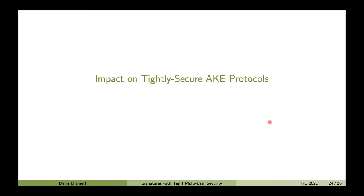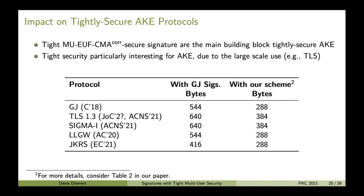As I said in the introduction, our construction is a perfect candidate to instantiate tightly secure authenticated key exchange. Tight multi-user secure signatures with adaptive corruptions are the main building block of tightly secure authenticated key exchange, as they exactly reflect what we need from a signature scheme in that context. Tight security is particularly interesting for authenticated key exchange due to its large-scale use — for example, TLS with its huge number of users. We show in our paper (see Table 2) that the communication complexity of all recently proposed tightly secure authenticated key exchange protocols significantly reduces when instantiated with our signature scheme.